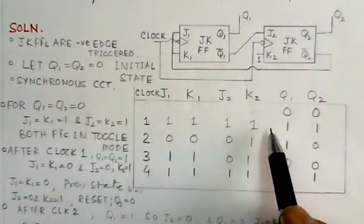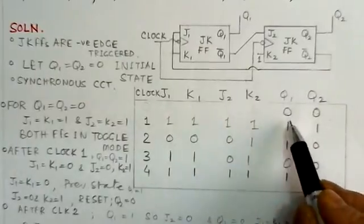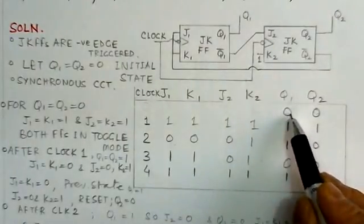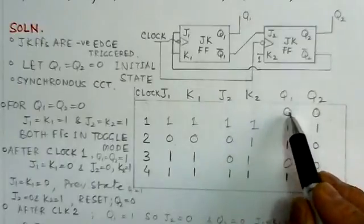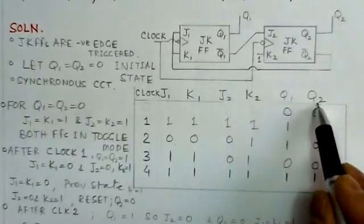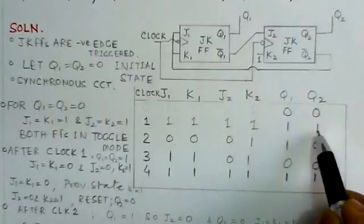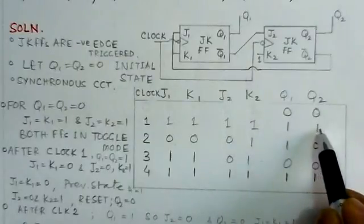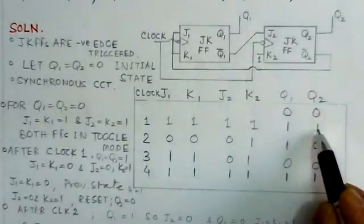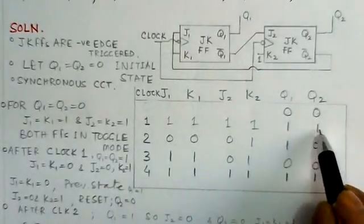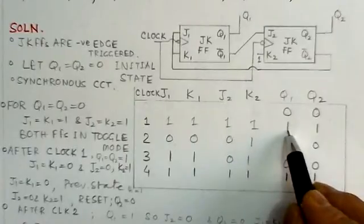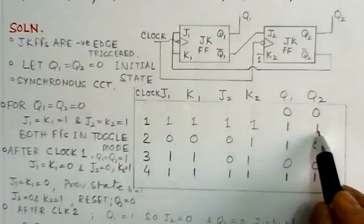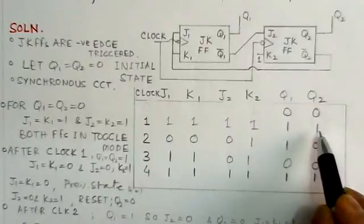After the first clock pulse, both flip-flops toggle: Q1 changes from 0 to 1, and Q2 also changes from 0 to 1. So after the first clock pulse, the state is Q1=1, Q2=1. Now we determine the corresponding inputs J1, K1 and J2, K2 for this new state.